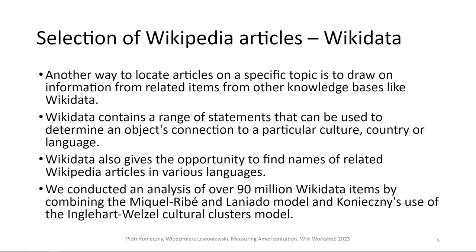There are many issues we had to deal with, including that some countries don't have an associated language. For example, India is a very large populous country but there is no single Indian language. On the other hand, English Wikipedia is actually used by the United States, United Kingdom, Ireland, and many other countries — the same applies to Spanish, Portuguese, and Arabic Wikipedia. We devote quite a lot of discussion in our full paper to these associated limitations.